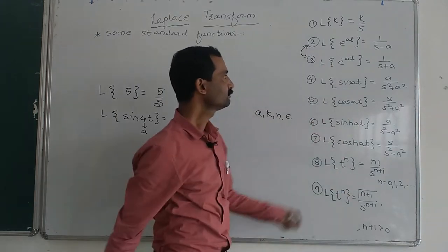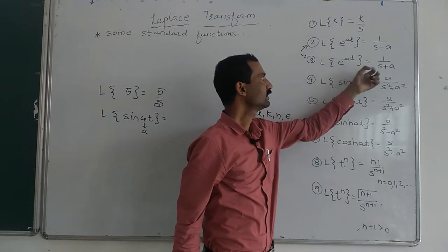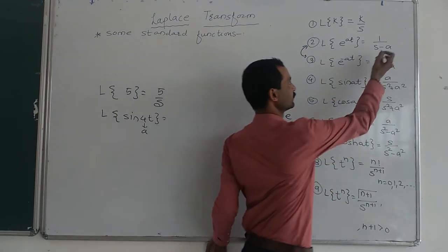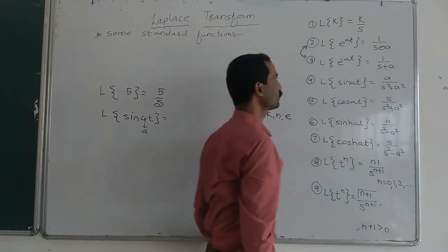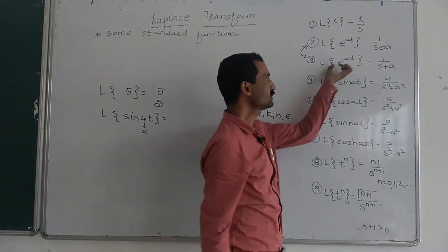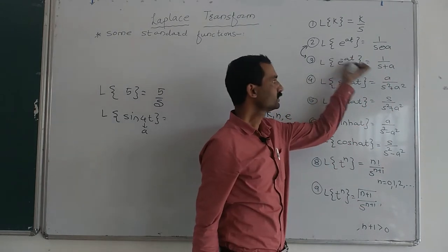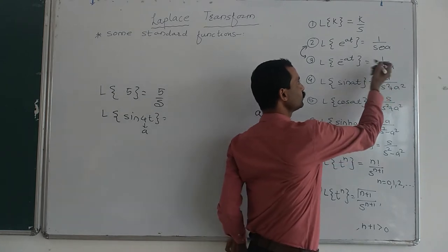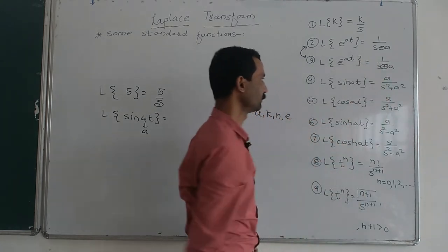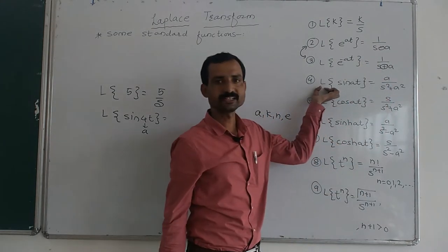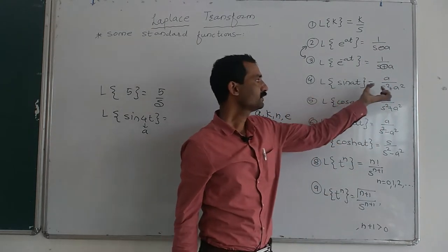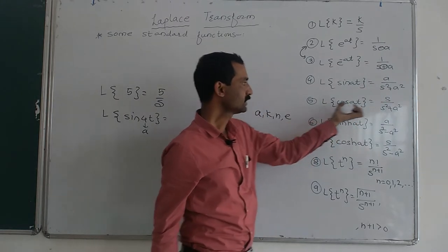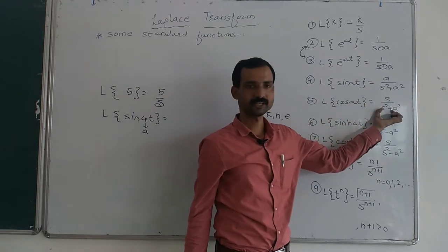If you compare the 1st, 2nd, and 3rd formulas, if the power of the exponent is plus, then we take a minus sign. If the power of the exponent is negative, then we take a plus sign. So Laplace of sin(at) is equal to a upon s squared plus a squared, and Laplace of cos(at) is equal to s upon s squared plus a squared.